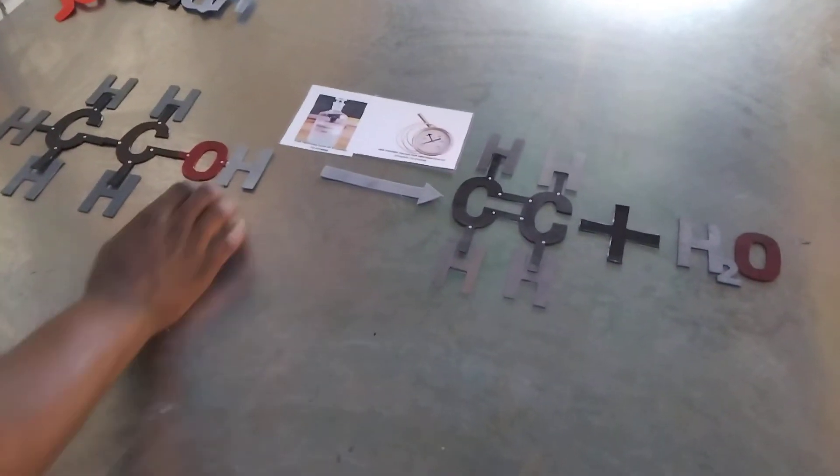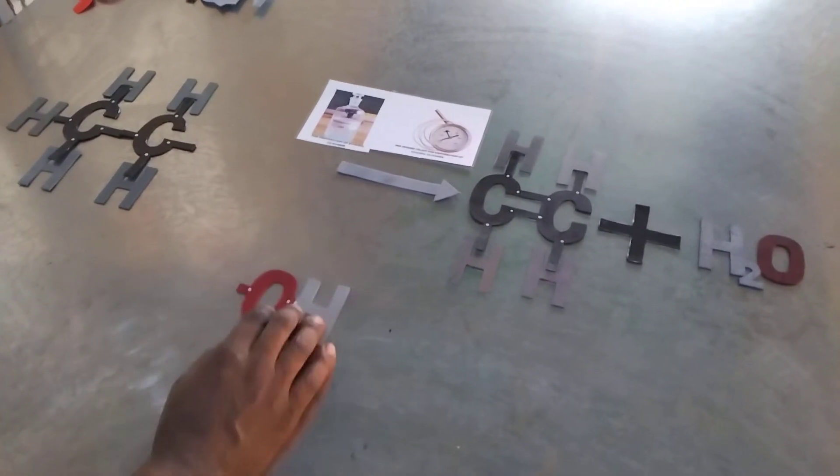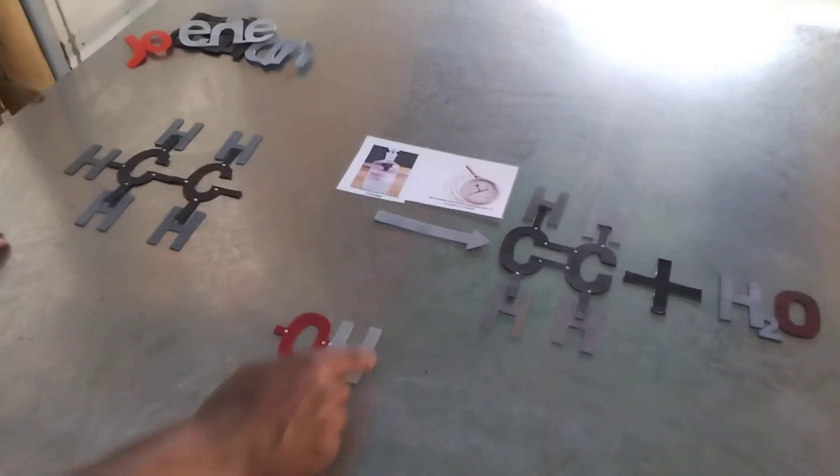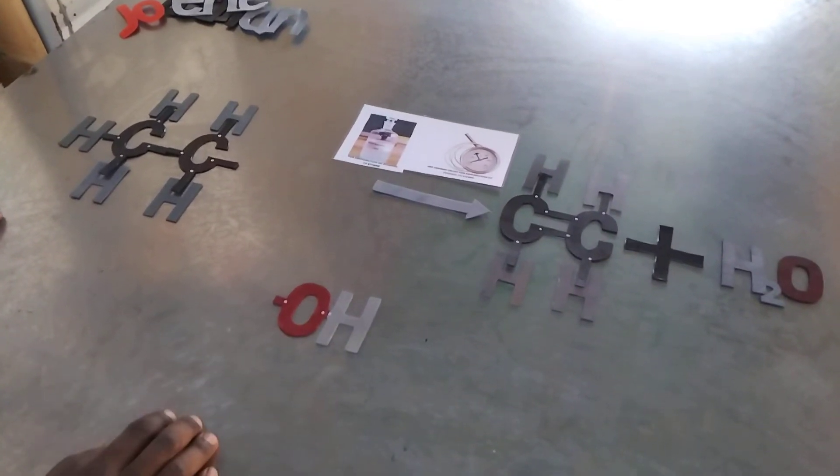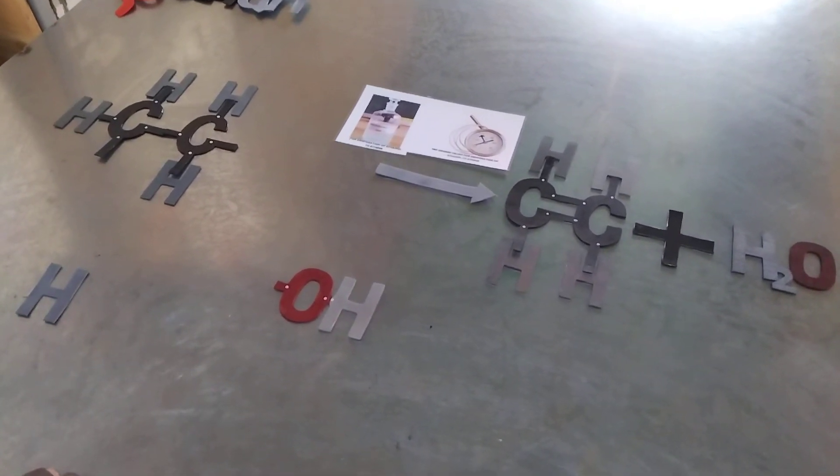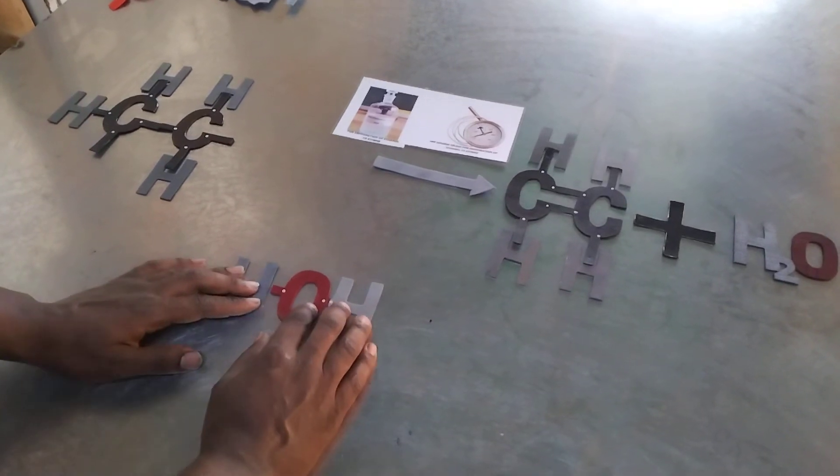So once you put some concentrated sulfuric acid and you raise the temperatures to about 180 degrees here, this molecule moves out. Now this OH group moves out and then we have hydrogen to form water. Now this is this water here. This is H2O, two hydrogen atoms and an oxygen atom.